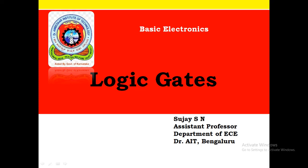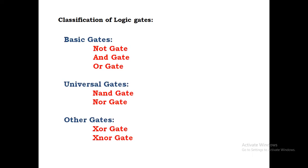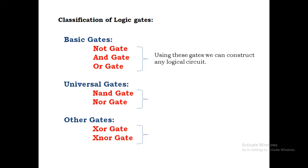Hello everyone, welcome to this lecture. Here I am going to explain logic gates. First, let us see the classification of logic gates. Logic gates are classified as basic gates, universal gates, and other gates. In basic gates we have three types: NOT gate, AND gate, and OR gate. In universal gates we have NAND gate and NOR gate. Other gates are XOR and XNOR.